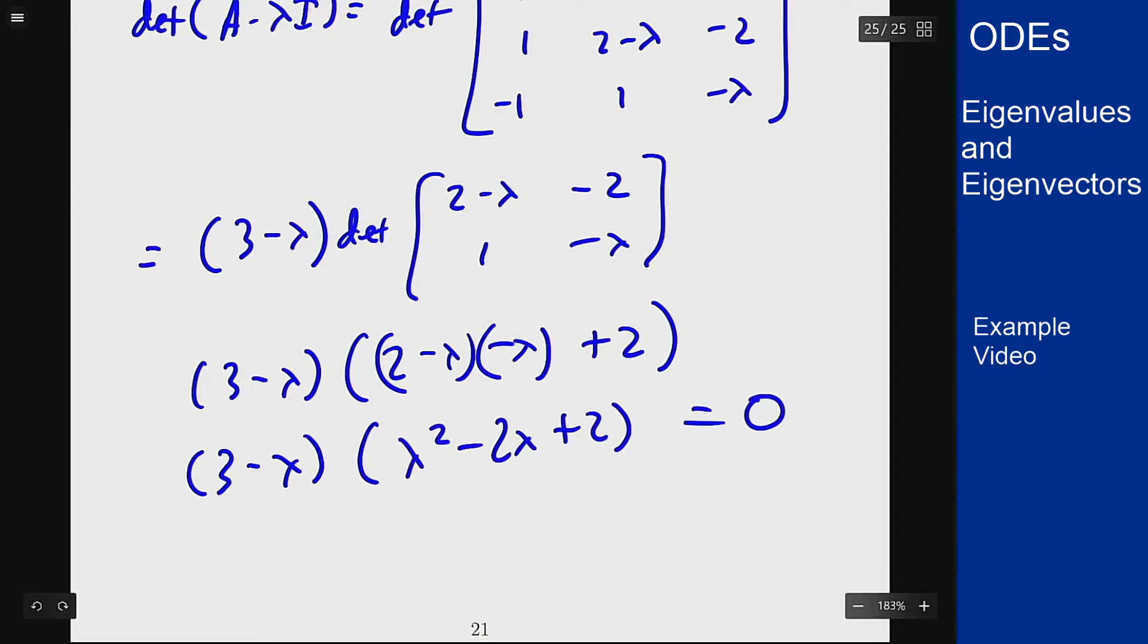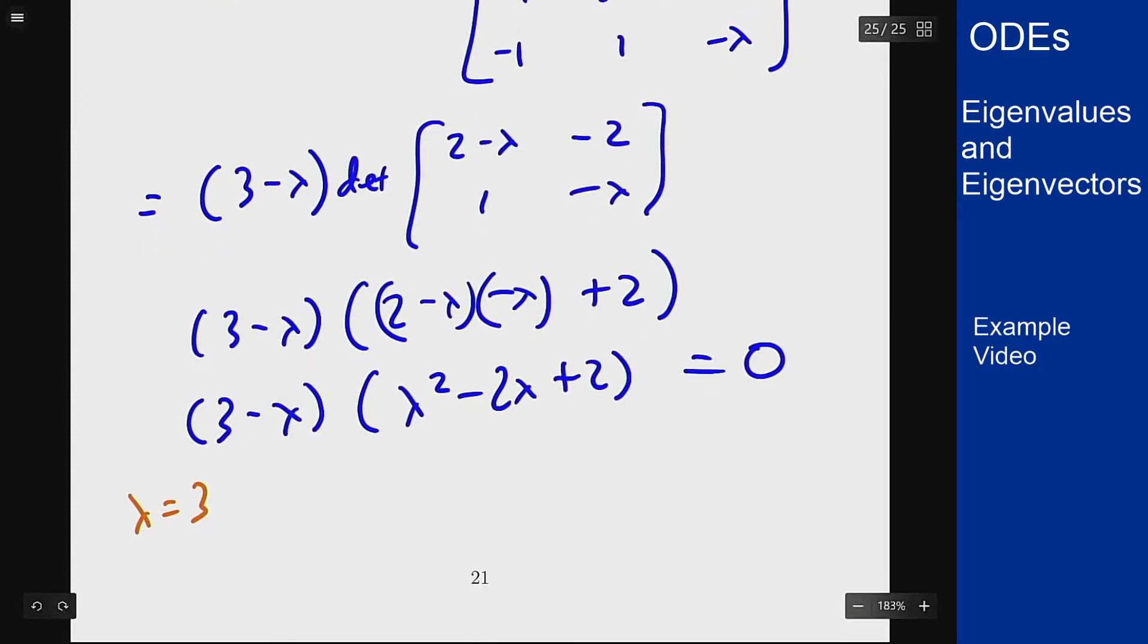We can expand out this expression that we want to equal 0. So we know we have lambda equals 3 as an eigenvalue. For the second part we're going to use the quadratic formula to get that lambda should be 2 plus or minus the square root of 4 minus 8 all over 2, or 1 plus or minus i. So we have one real eigenvalue and then a pair of complex conjugate eigenvalues.